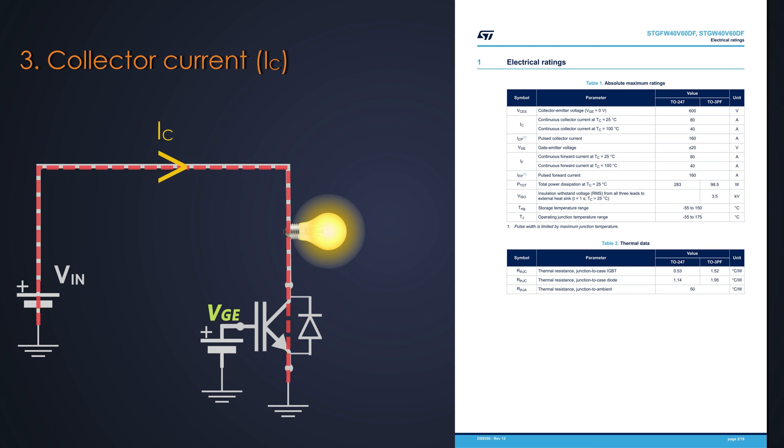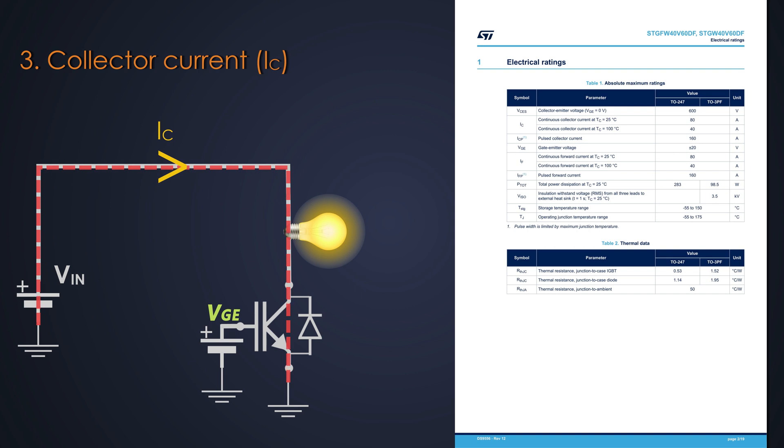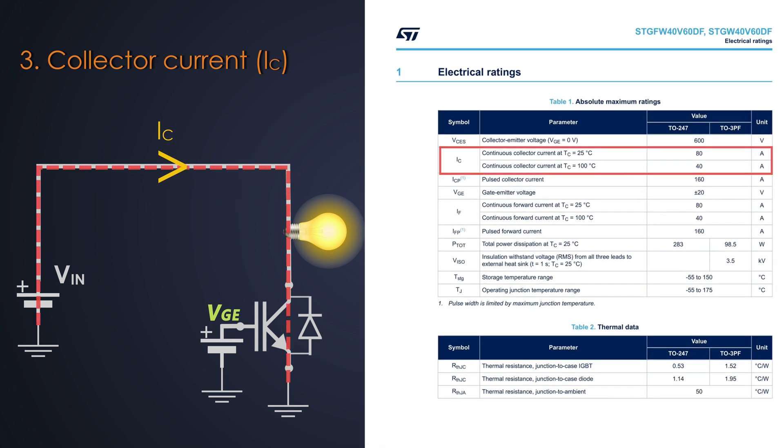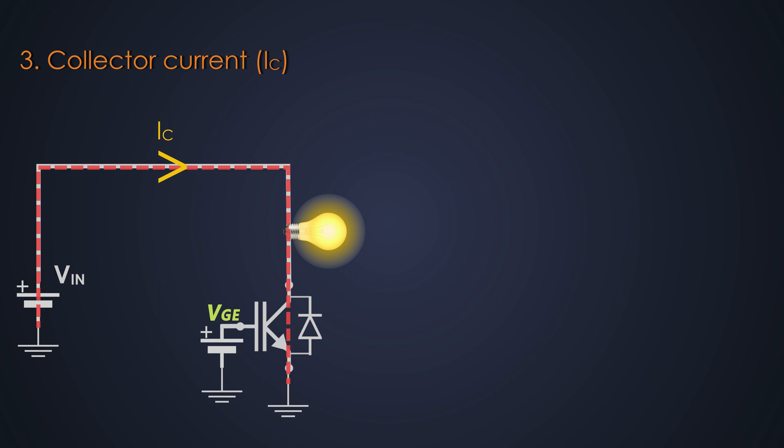Wait, what is the load current? It is basically a continuous DC collector current. It is the maximum continuous current which an IGBT can carry when it is on. This IGBT can carry up to 80 amperes at the junction temperature of 25 degrees Celsius. If this junction temperature rises up to 100 degrees Celsius, then this current would be 40 amperes. This collector current capabilities vary with the change in junction temperature and gate to emitter voltage.